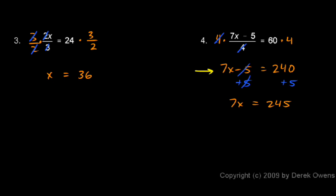So this gives us 7x equals 245. And again, you're encouraged to go from here to here without writing the plus 5 plus 5, just to save time. In other words, you should be able to say in your head, I'm going to add 5 to each side, and that will get rid of the negative 5, leaving me with 7x, and that will change my 240 to 245.